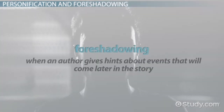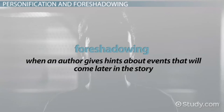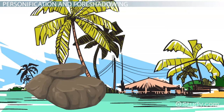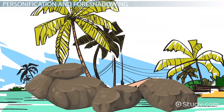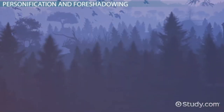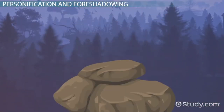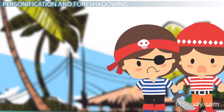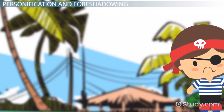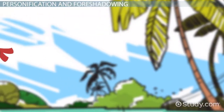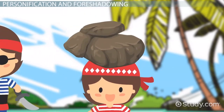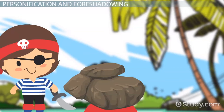Foreshadowing is when an author gives hints about events that will come later in the story. One of the most significant uses of foreshadowing in the book is the involvement of rocks. When Ralph, Simon, and Jack first climb to the top of a high hill, they roll a rock over the edge and it tumbles into the forest, destroying a path. This foreshadows future doom of the island, as well as two other specific rock incidents: the rock that Roger throws at Piggy, which kills him, and the rock the savages throw at Ralph to force him out of hiding so they could kill him.